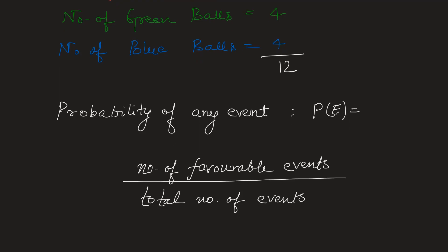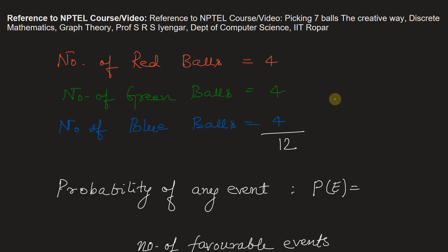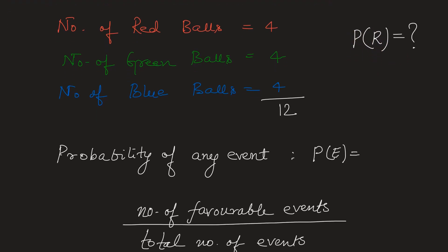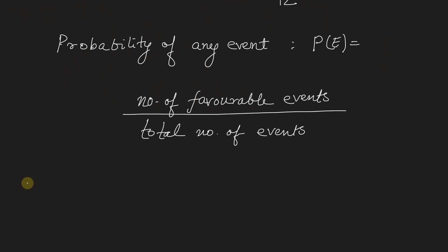In this problem we need to find the probability that when three balls are picked at random, all three balls are red. We know that the number of ways of selecting r things out of n things is given by nCr.